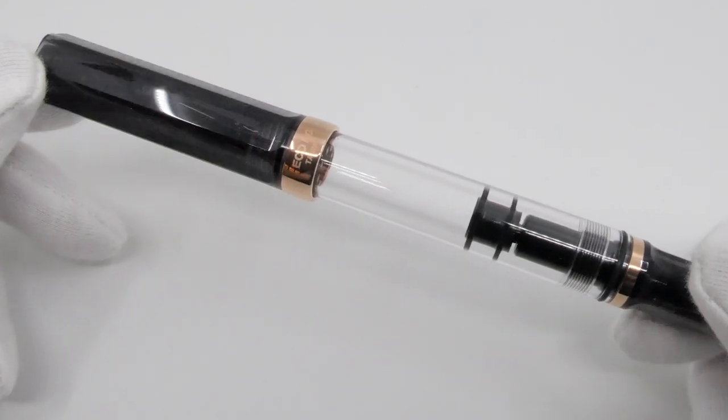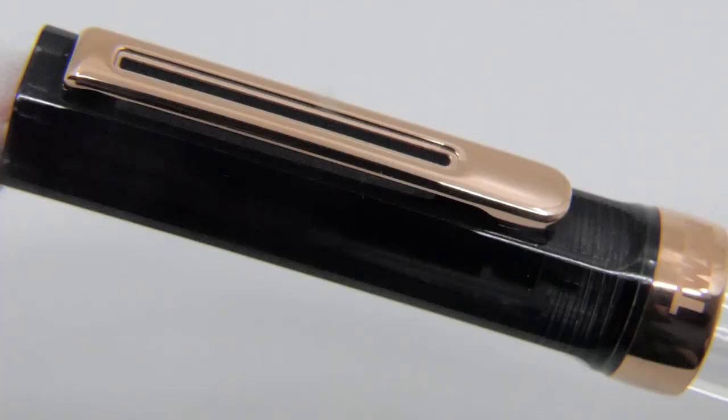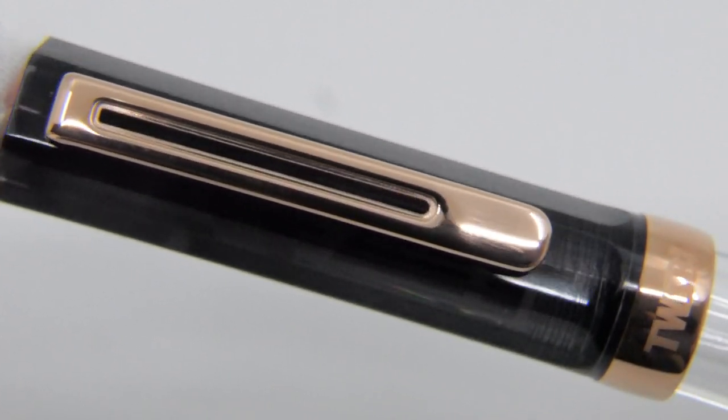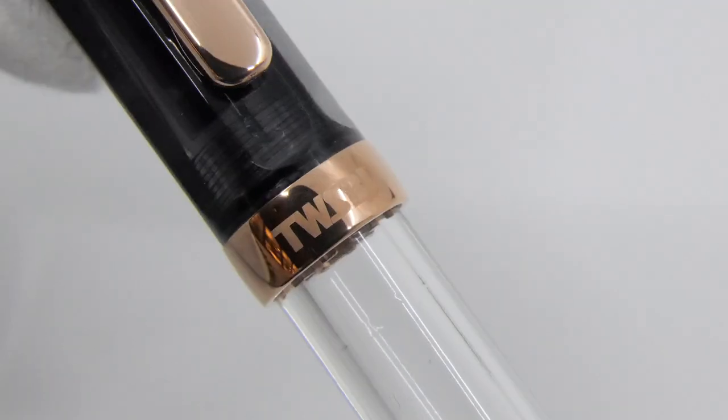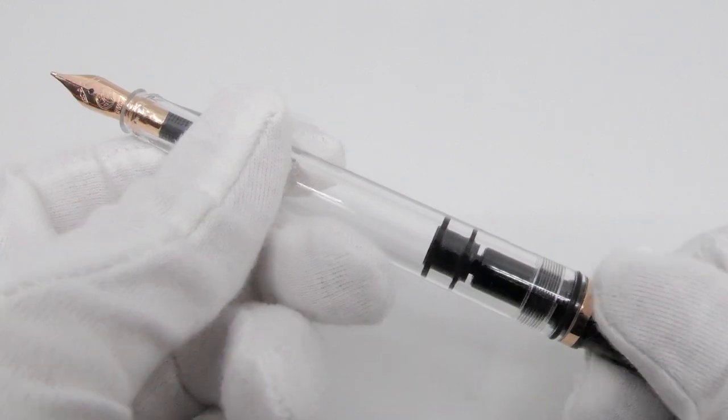This edition comes with a transparent acrylic barrel, as you are familiar with from Twisbee, and with a smoke gray colored semi-translucent resin cap, piston knob, and grip section. To match the smoky gray parts, the metal details are trendy red gold plated.